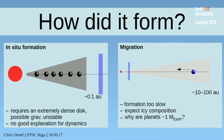For the in-situ scenario, you need a very massive disk, because you want to form these planets where we see them now. So it means an extremely massive disk that was probably gravitationally unstable. It also gives no good explanation for the dynamical properties of these planets.